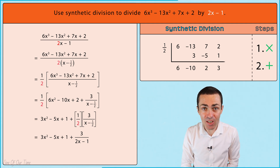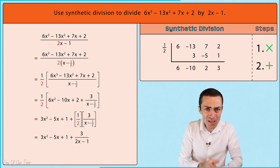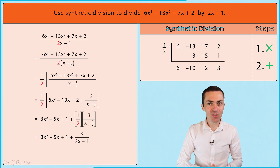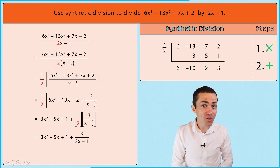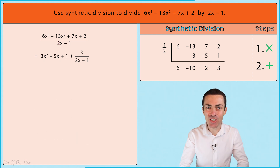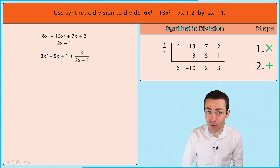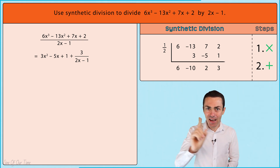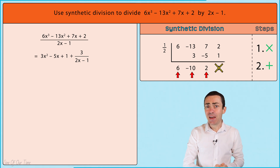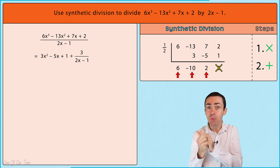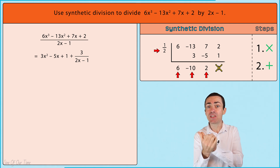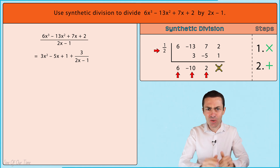I wanted you to understand mathematically what was going on during this division, which is why I showed all those calculations. But technically, we don't have to perform them — there is a quicker way. The magic of this kind of problem is that we can still perform synthetic division as always, with just one added step: take the numbers at the bottom of the synthetic division symbol, except for the remainder, and divide them by the denominator of the fraction written to the left of the synthetic division symbol.